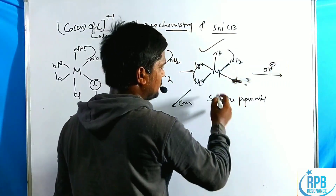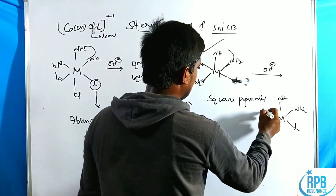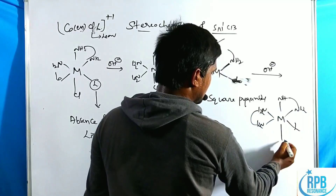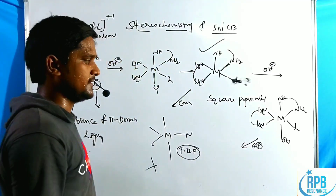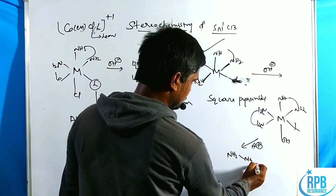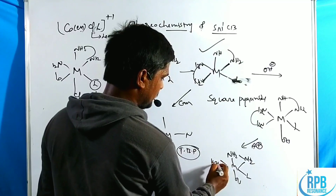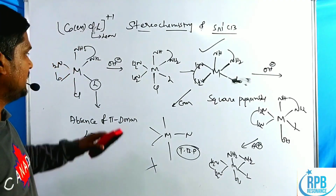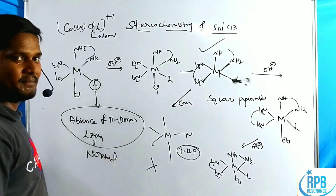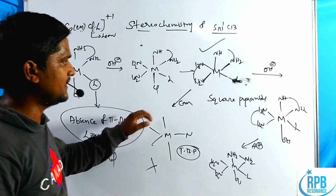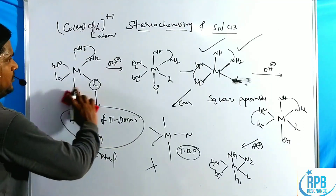After forming the square pyramidal intermediate, the base (OH⁻) attacks the empty site. The NH₂ groups of ethylenediamine are present, and OH⁻ occupies the vacant position, followed by addition of H⁺. This gives the final product [Co(en)₂(OH)(L)]⁺. So under normal conditions — absence of π-donor ligands — the square pyramidal intermediate is the major pathway.